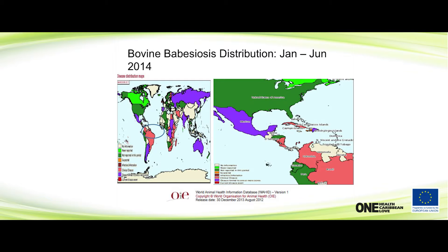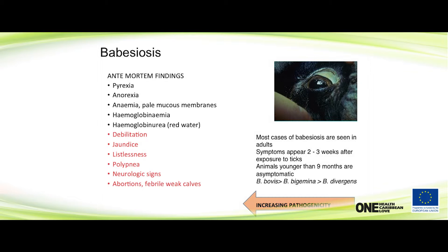Most of us have probably noticed these clinical signs. You can get jaundice, debilitation, neurological signs, abortion, weak calves. Most cases are often seen in adults, and symptoms can appear any time after exposure to ticks, usually between two to three weeks. Animals younger than nine months are thought to be asymptomatic. Regarding severity, Babesia bovis is more pathogenic than B. bigemina, which is more pathogenic than B. divergens. Divergens is also known to be a pathogen of human beings.